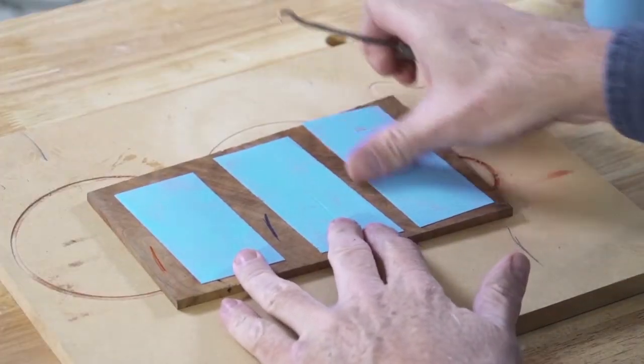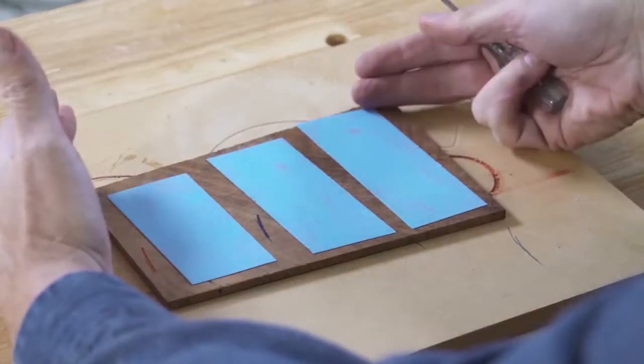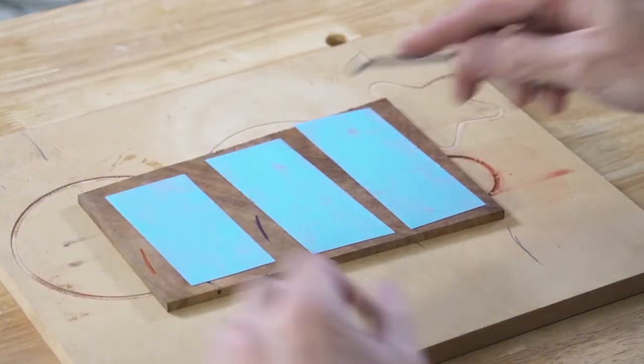The double-sided tape has already been applied to my inlay material, so now I'm going to peel the vinyl backing off of the tape, flip it over, and stick it to my backing material.